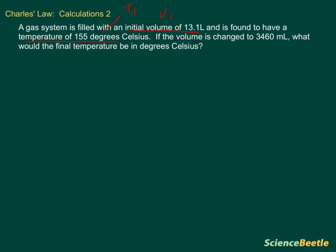We know that we're going to change the volume and we can see that because it tells us it's changed to a new value. This is going to be your V2, your second volume. What they want us to find is the final temperature, and that is what we don't know. That is our T2.